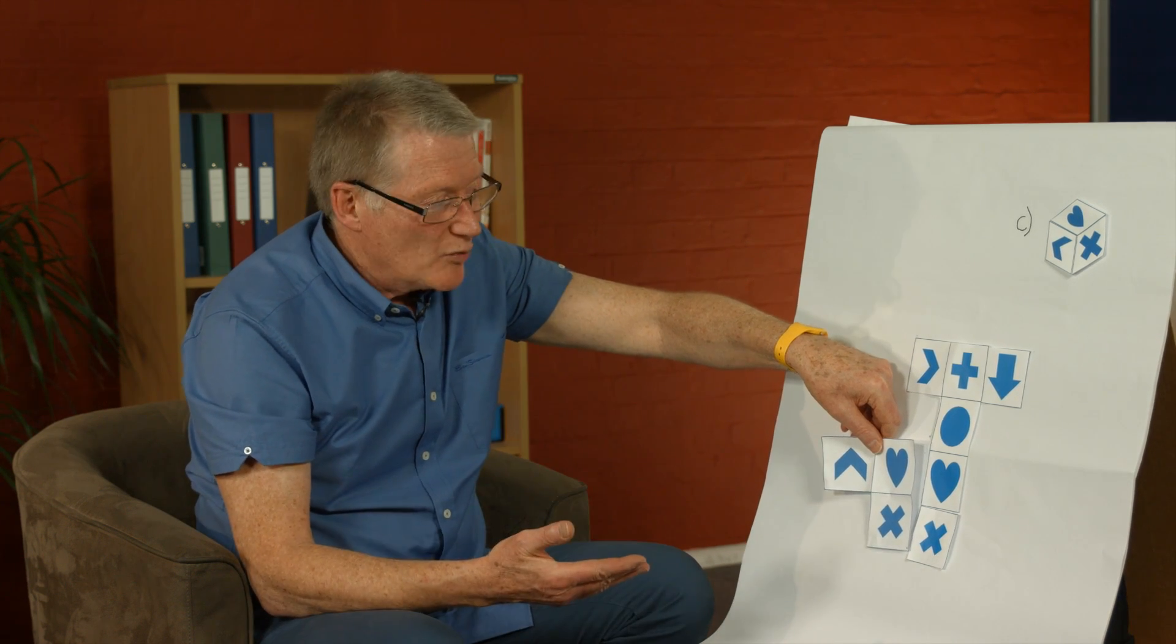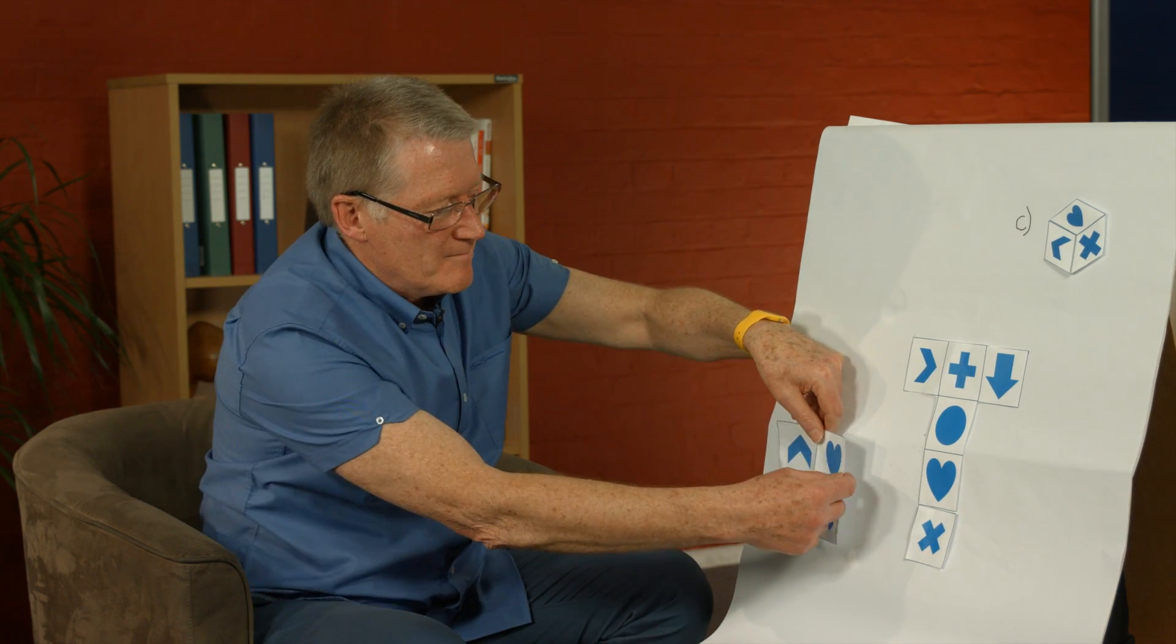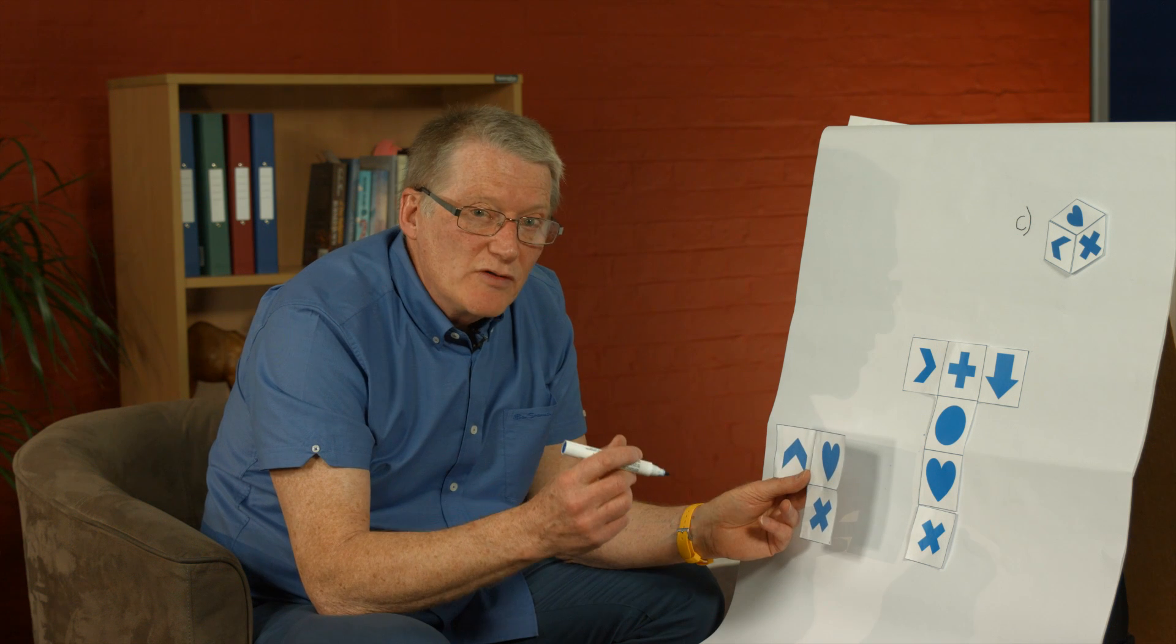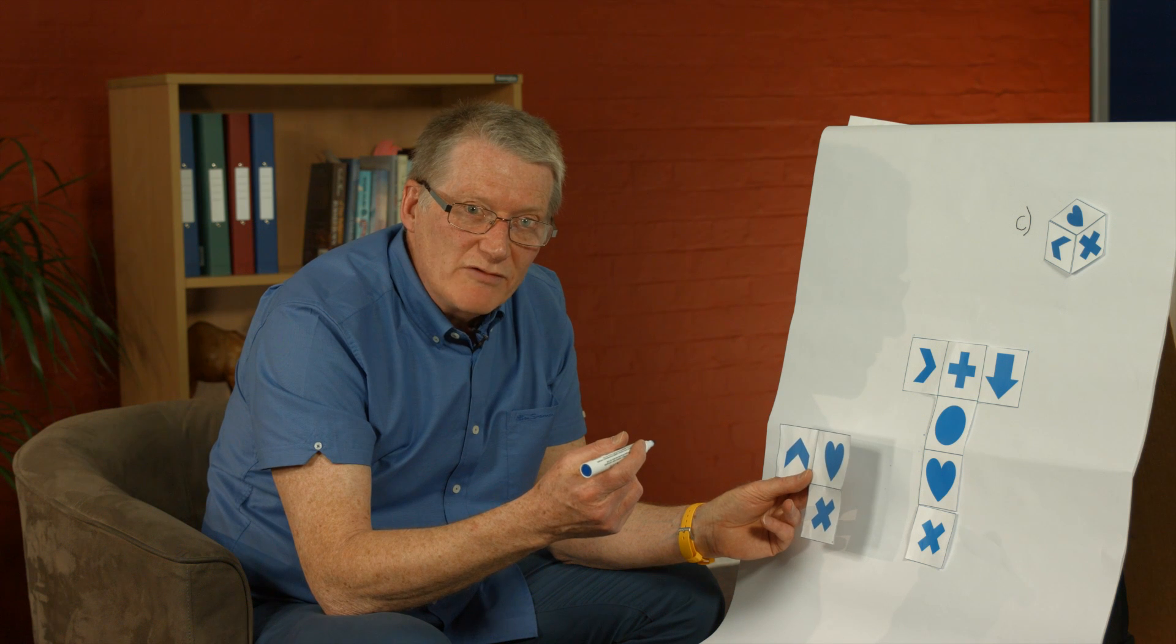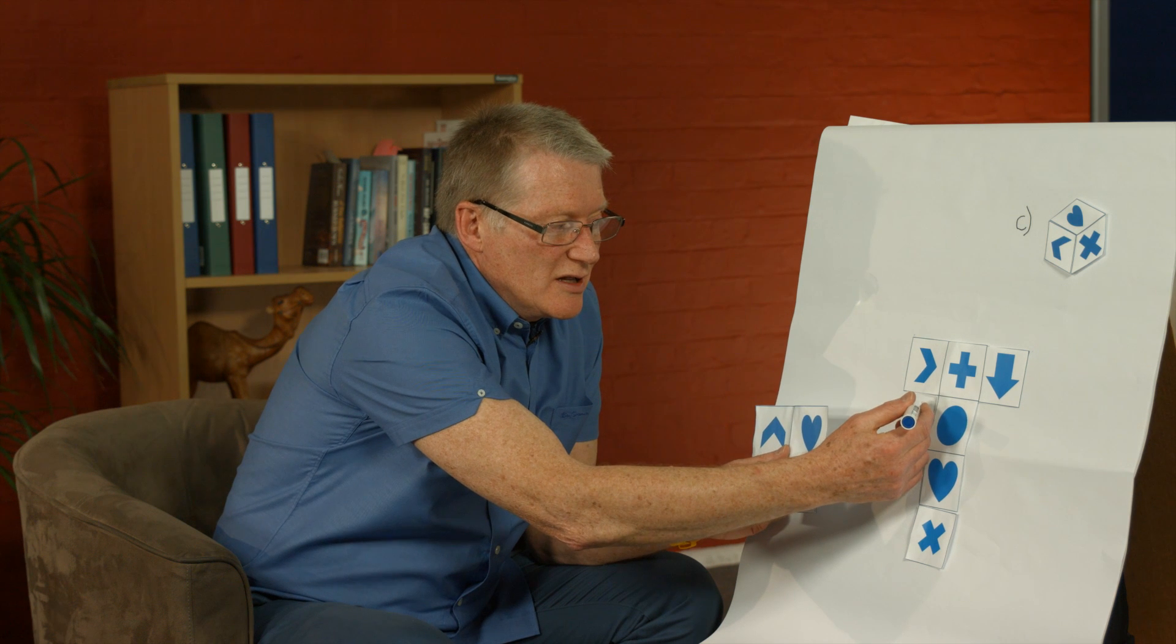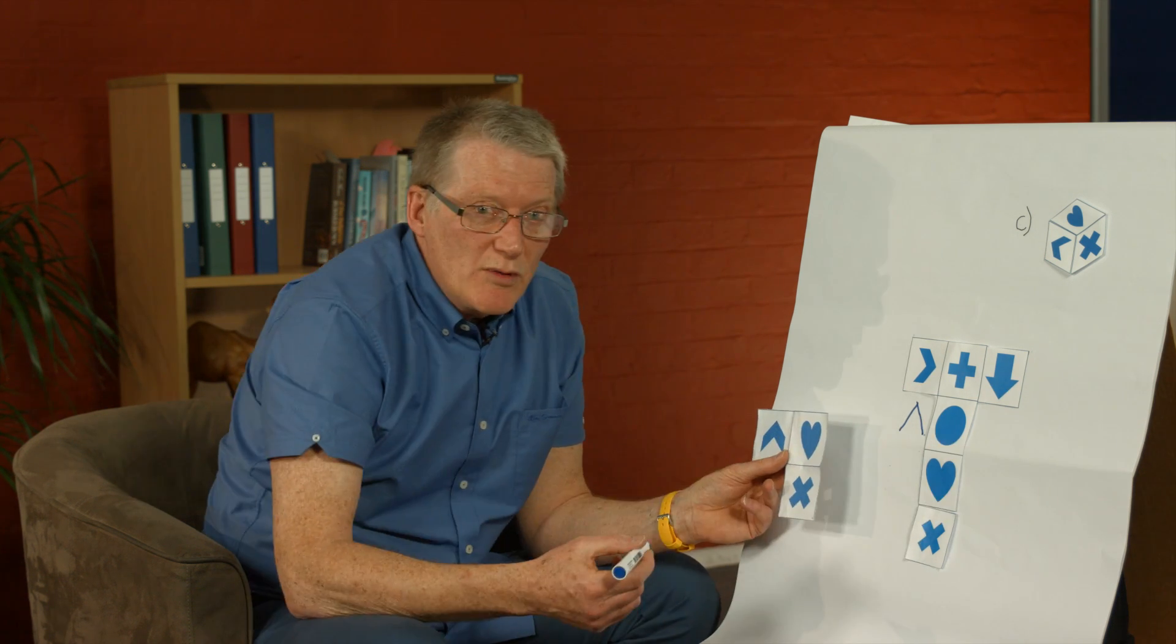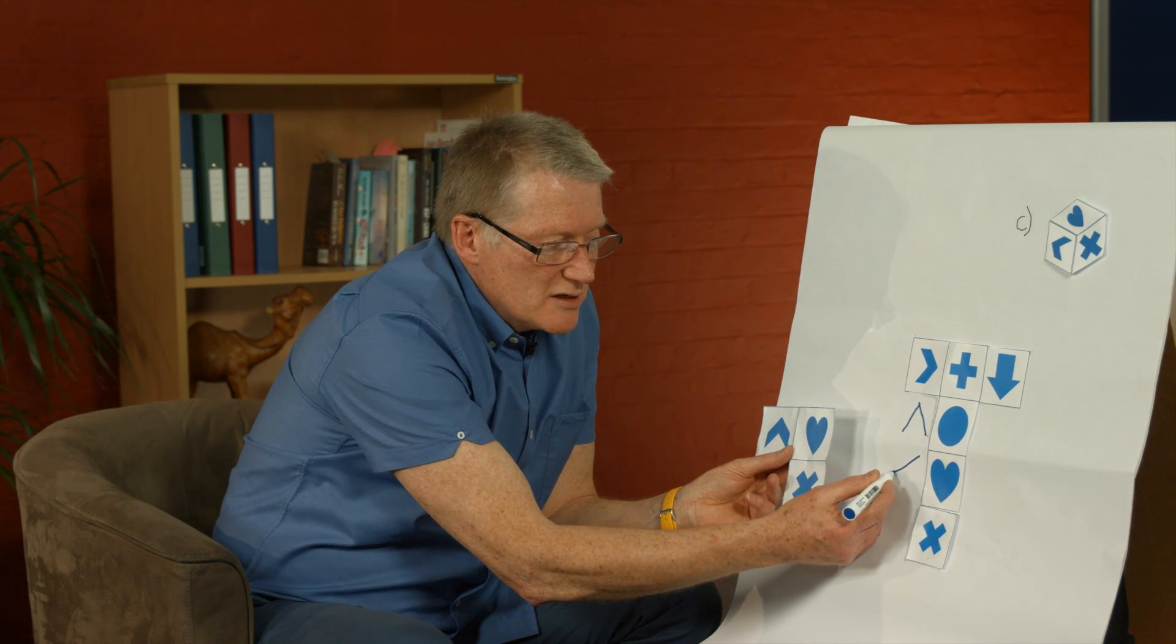So the only one that we've now got to work out, to worry about is the arrowhead. Now we can move the arrowhead down, but we have to remember that as we move it down, it rotates by 90 degrees each time we move it down one face. So moving it down to be next to the circle, it will rotate to this position. And then moving it down to be next to the heart, which is where we want it, it goes round by another 90 degrees to this position.